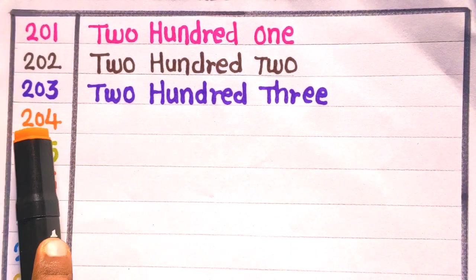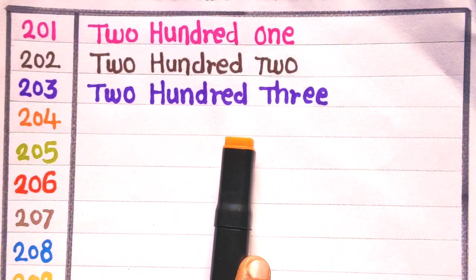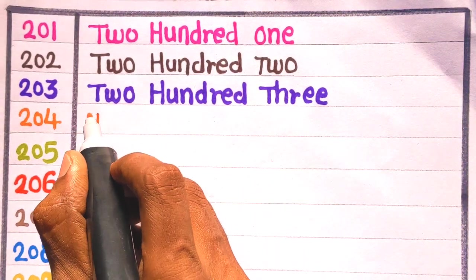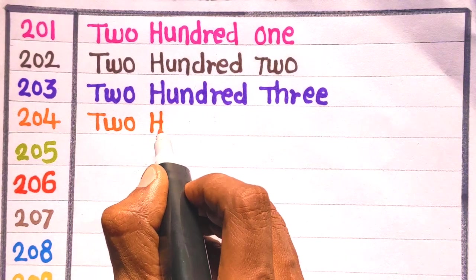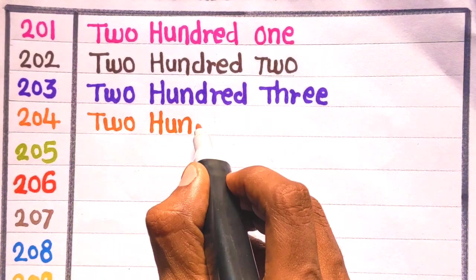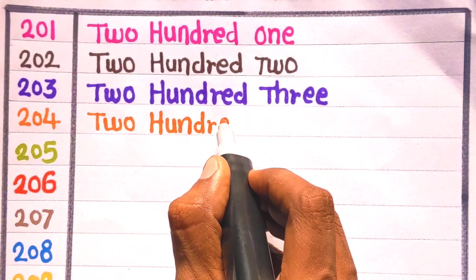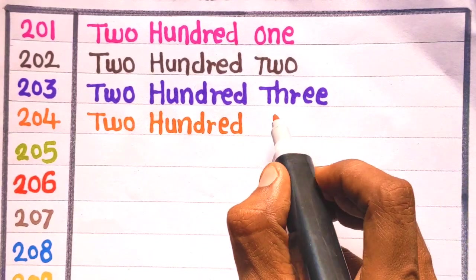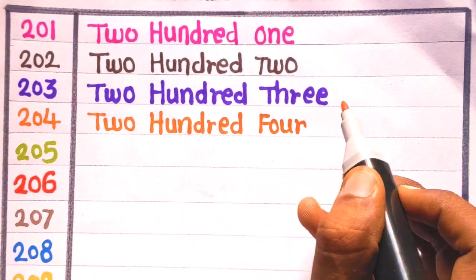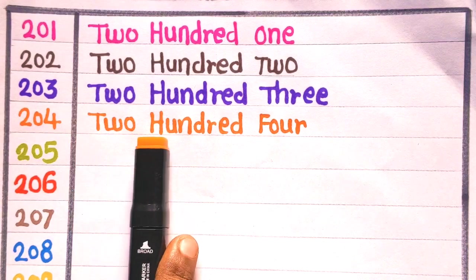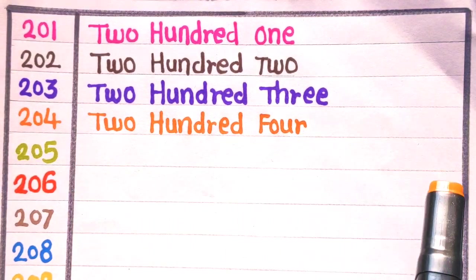Next is 204. E is 204. T, W, O, 2, H, U, N, D, R, E, D, 100, F, O, U, R, 4, 204. With the orange color.